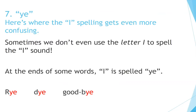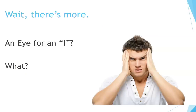Number seven: Y-E. Here's where the I spelling gets even more confusing. Sometimes we don't even use the letter I to spell the I sound. At the ends of some words, I is spelled Y-E. For example: wry, dye, goodbye. Wait, there's more. An I for an I? What? Why?